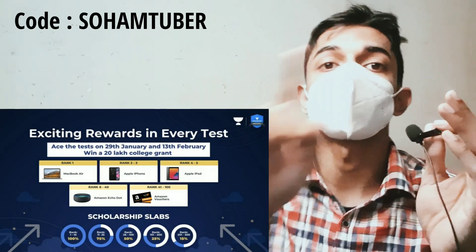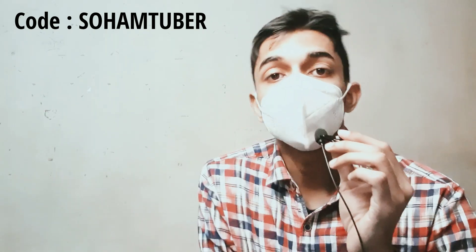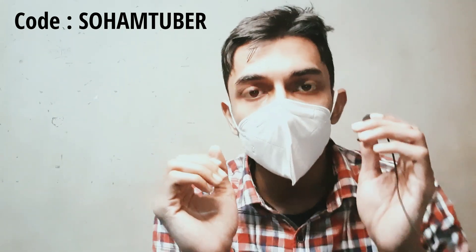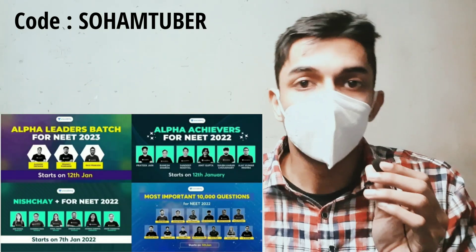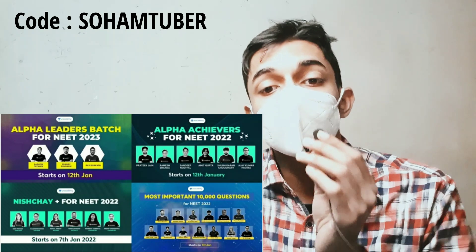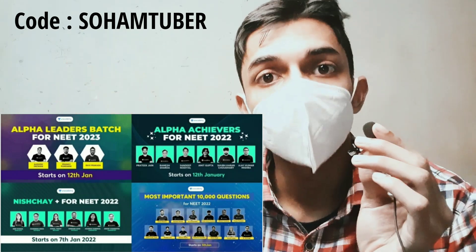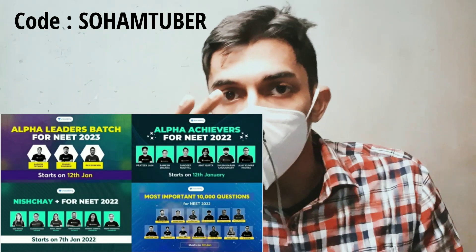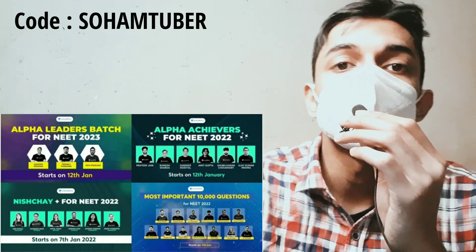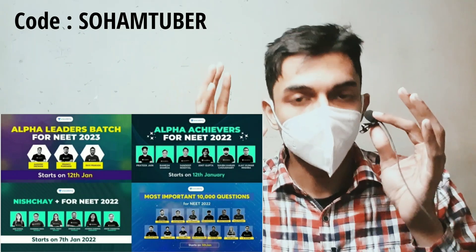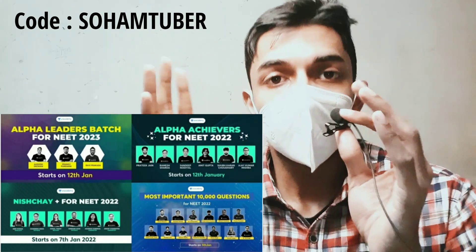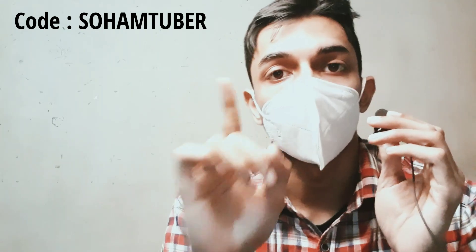For those who are asking for complete batches for the evening time period ताकि preparation अच्छे से हो जाए - Unacademy ने batches launch किए हैं। पहला Plus batch, दूसरा Alpha Achievers batch for NEET 2022 - पहला 7th of January से start, दूसरा 12th of January onwards। For NEET 2023, Alpha Leaders batch 12th of January onwards start हो रहा है।